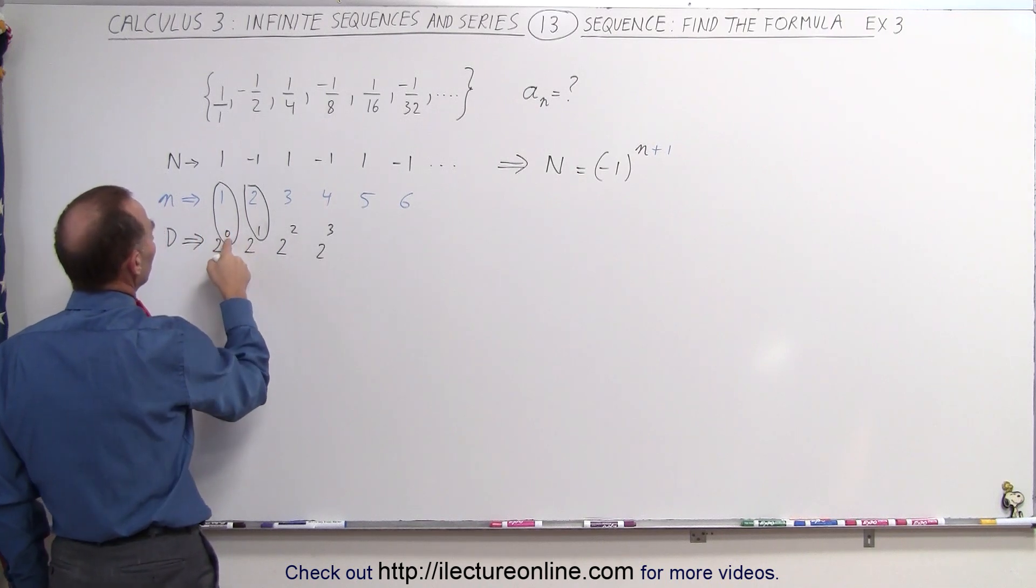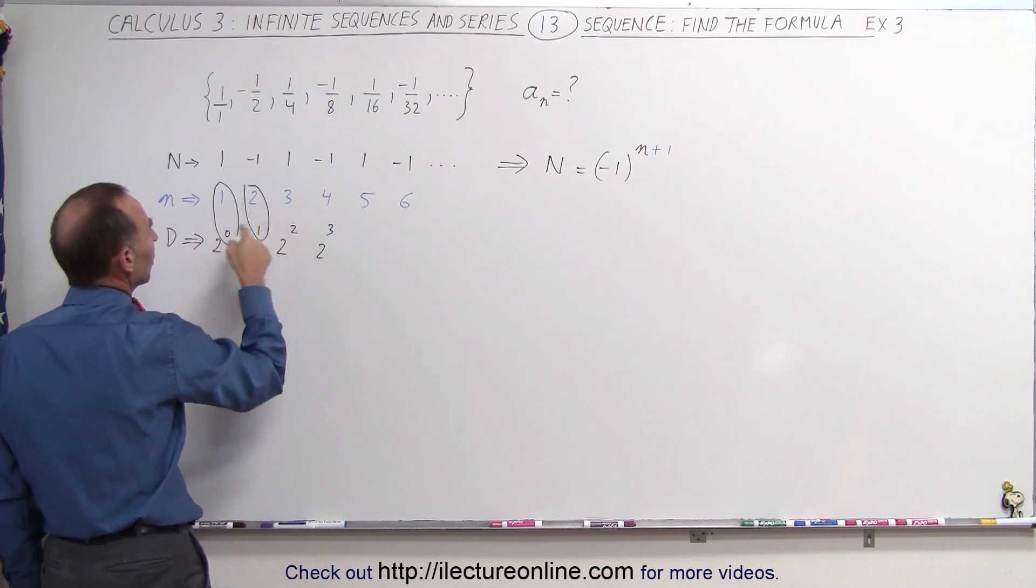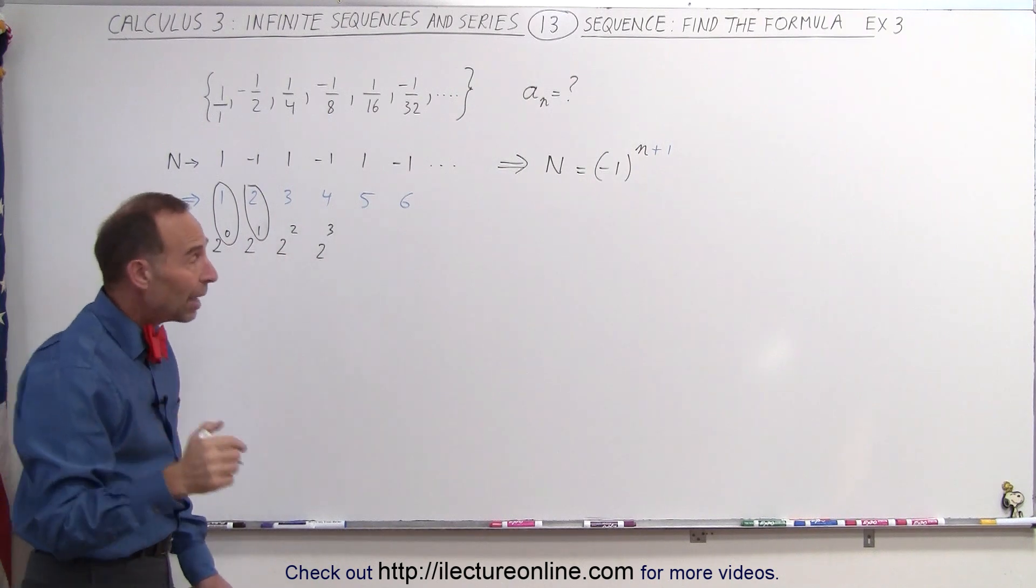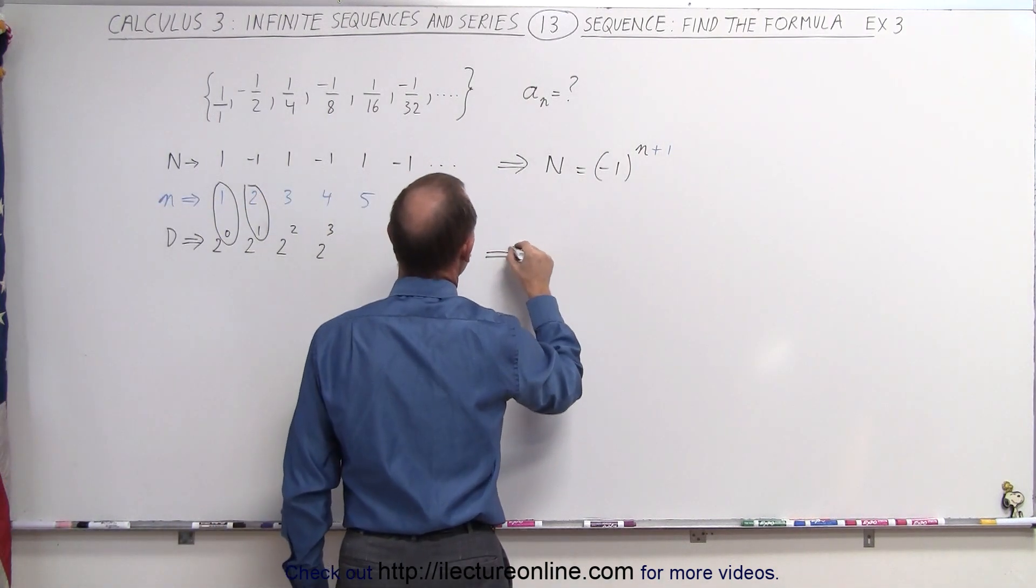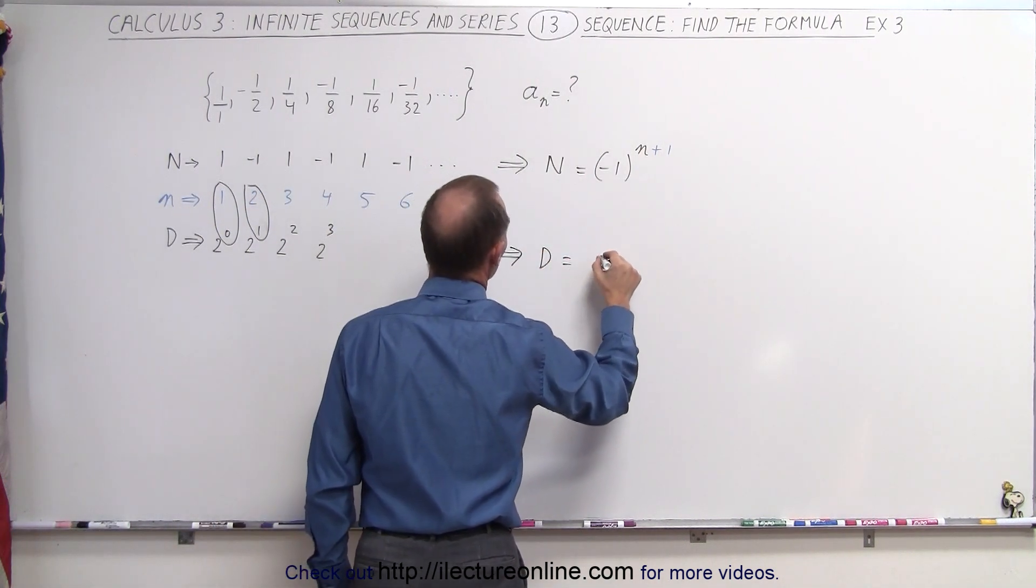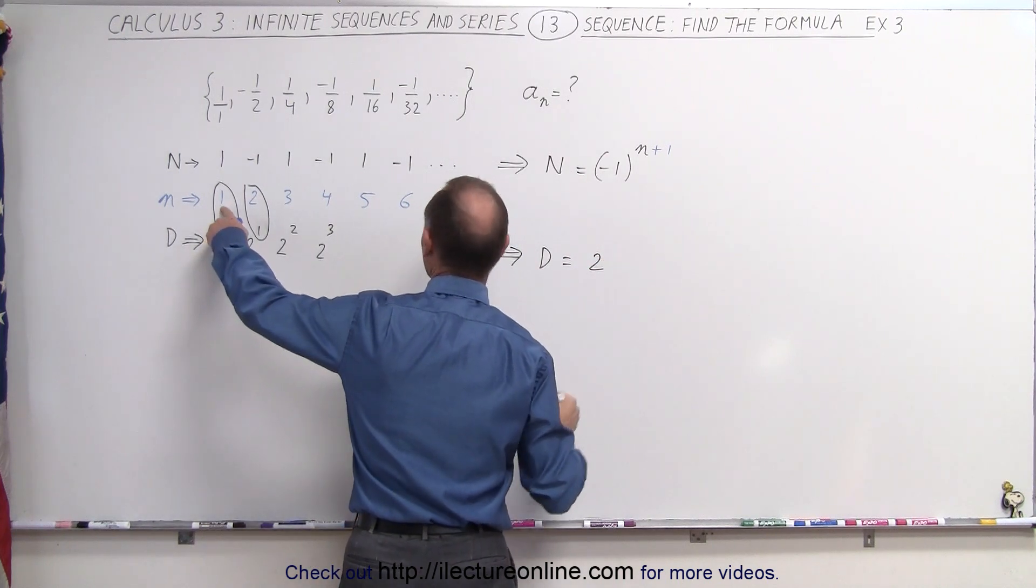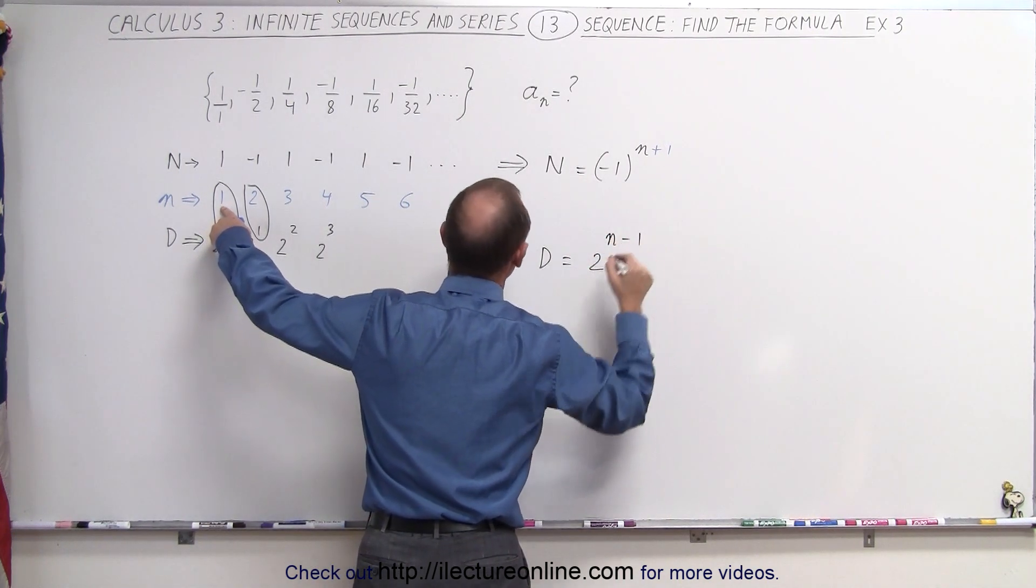So when n is one, the exponent is zero. When n is two, the exponent is one, which means the denominator can be expressed as the number two raised to the n power minus one.